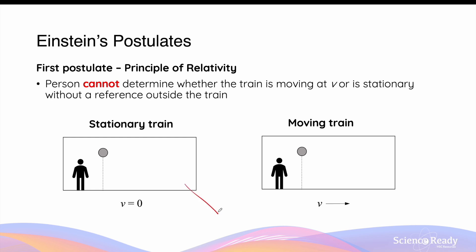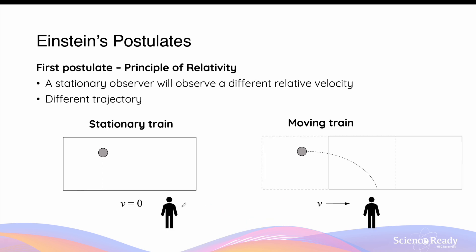The first postulate mandates that all inertial reference frames are equivalent. If we change the location of the observer so that the person observing the falling motion of the ball is no longer in the train but standing stationary outside the train: in the scenario of the stationary train, the ball will be observed to fall vertically. However, a different trajectory will be observed in the moving scenario. Because the person is standing stationary and not on the moving train, the ball will be observed to have a horizontal relative velocity equal to that of the moving train, and to the stationary bystander, the ball will undergo a parabolic projectile motion.